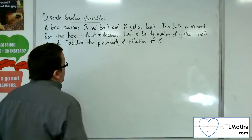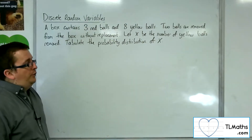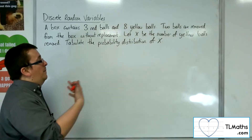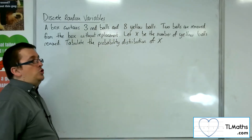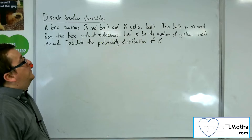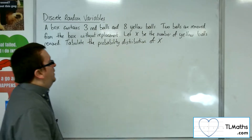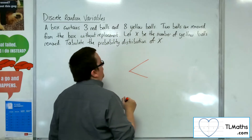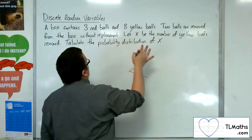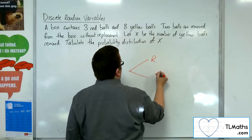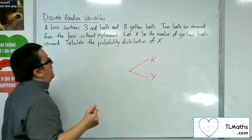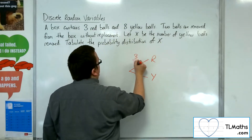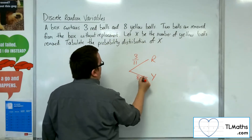In this problem, it would be useful if we used a probability tree in order to work out the probabilities of extracting each set of balls from the box. So we're going to make that first choice, and the colour of the ball can either be red or yellow. The probability of picking out a red ball initially is three out of 11, and for yellow it's eight out of 11.